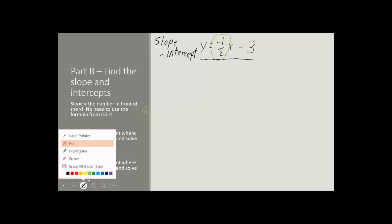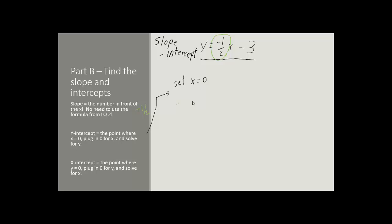Now to find the y-intercept, it's not that much harder. What we're going to do is we're going to set x equal to 0 and then find y. So set x equal to 0. So everywhere we see x in that equation, we don't put x anymore. We put 0. I'll write that in red. So see where it says x here? We just put 0. And then the rest of the equation does not change. So we'll have y equals negative 1 half times 0 minus 3.